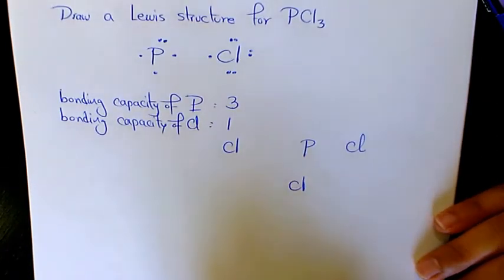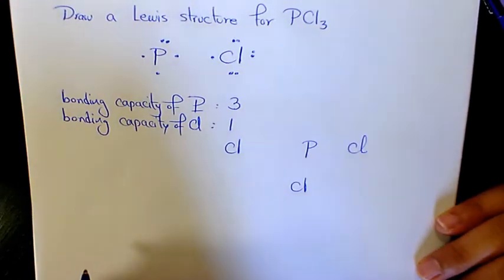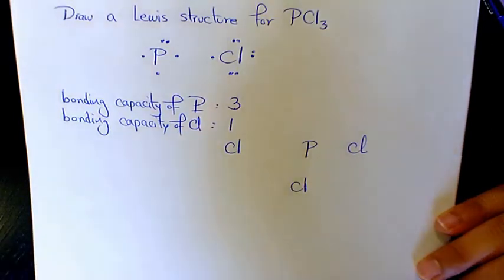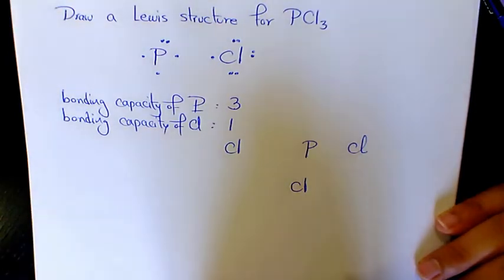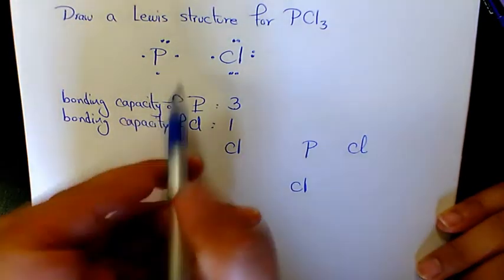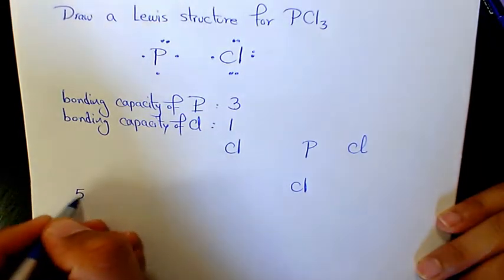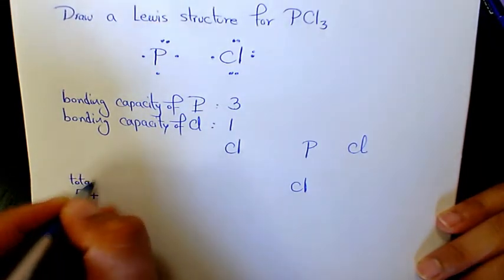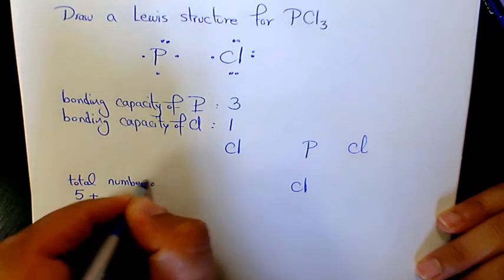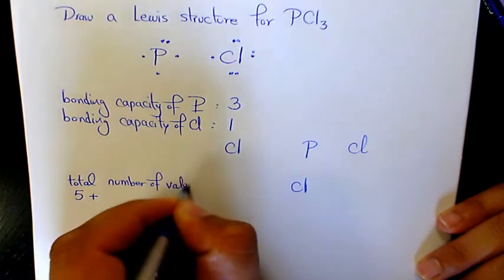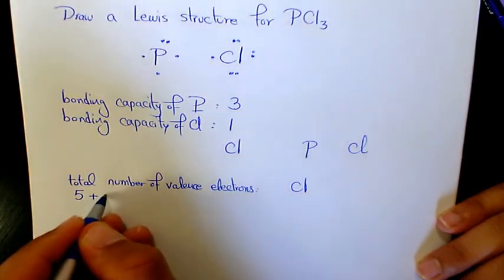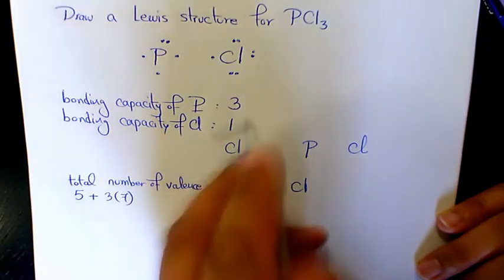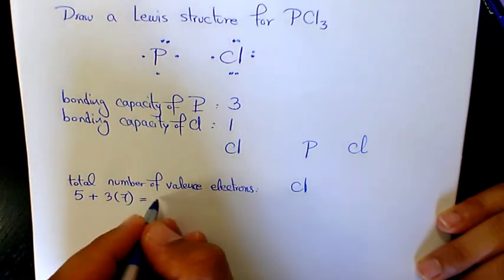Next, we need to add up the number of valence electrons available for each element. This total number represents the total number of dots you can draw in your Lewis structure. For P we have five, so the total number of valence electrons is five plus three times seven — because chlorine has seven — so five plus twenty-one is going to be twenty-six.